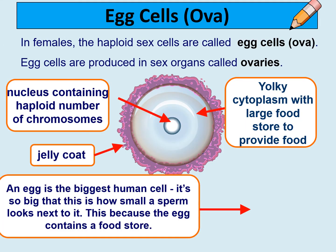The female haploid sex cell — also known as the gamete — is the egg cell or ovum. Egg cells are produced in sex organs called ovaries, also referred to as gonads. The egg cell is specialized: its nucleus contains a haploid number of chromosomes so it can fuse with the sperm to create a diploid zygote. It has a jelly coat and a large food store in its cytoplasm. An egg is the biggest human cell — a sperm looks tiny next to it because the egg contains a food store.